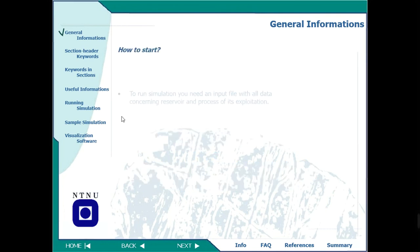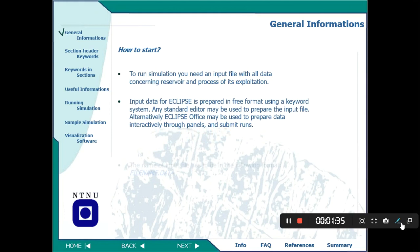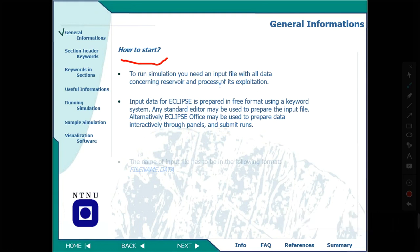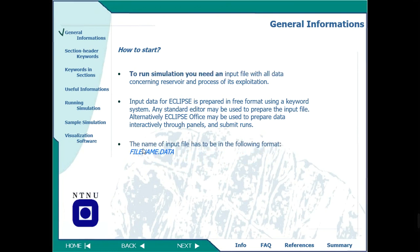So the first question is how to start with Reservoir Simulation — how to start with this software. Well, first of all, to run this software we need an input file with all the data concerning the reservoir and the simulation process. We need an Eclipse file, and the extension of this file is actually '.data' — it has the filename dot data. I will show you the file and how to run it.